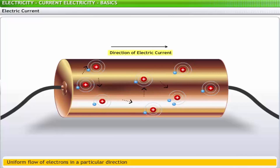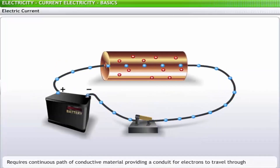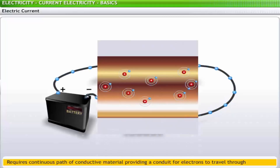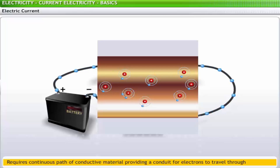The direction of electric current is the same as the direction of flow of electrons. Electric current requires a continuous path of conductive material to provide a conduit for electrons to travel through. Electrons move in the empty spaces within and between the atoms of a conductor. As each electron moves uniformly through a conductor, it pushes the one ahead of it. Thus, all the electrons move together as a group.